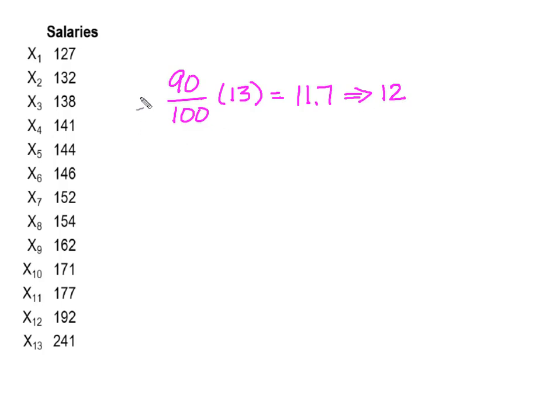Now, I need to find... remember, this is the index. So, I need to find what value resides in the 12th position from top to bottom. And that's this. So, now I know that the 90th percentile is $192,000. And what that tells me is 90% of my values in my data set are smaller than $192,000.